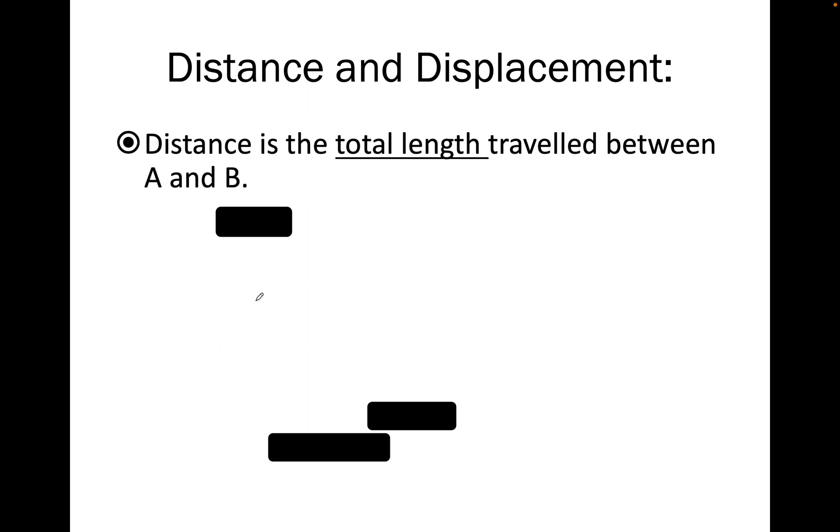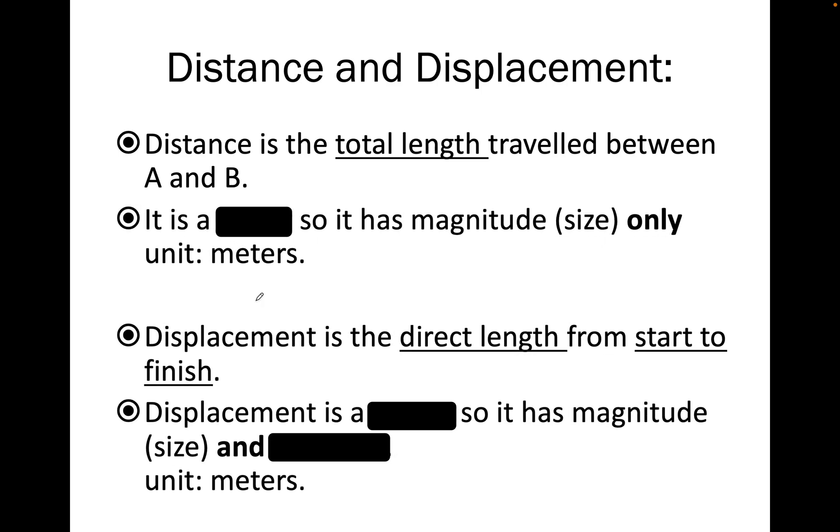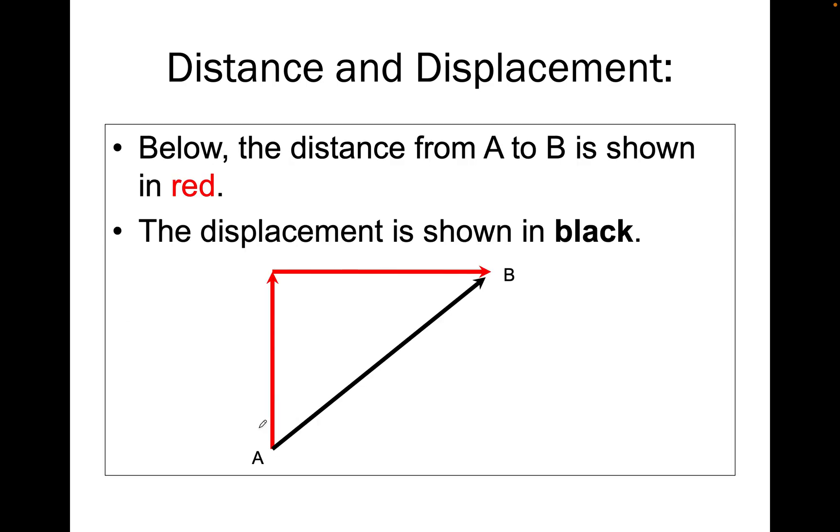Distance and displacement, as I said. Distance, total length travelled. Scalar, size only. Displacement, direct length from start to finish. Vector, has magnitude, size, and direction. So there it is all unblanked. The unit for both is the same. Both of the units are meters.